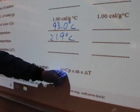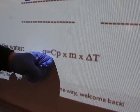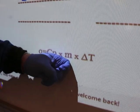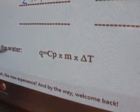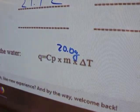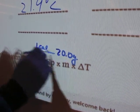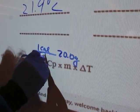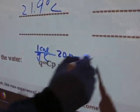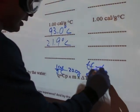We're going to use this formula: Q = Cp × m × ΔT, where Q stands for quantity of heat, Cp stands for specific heat capacity of water, m stands for mass of the water which is 20.0 grams, and specific heat capacity of water is 1 calorie per gram Celsius.